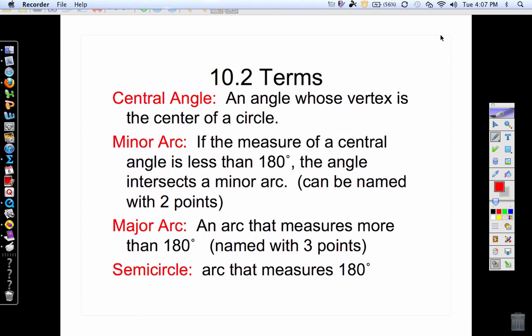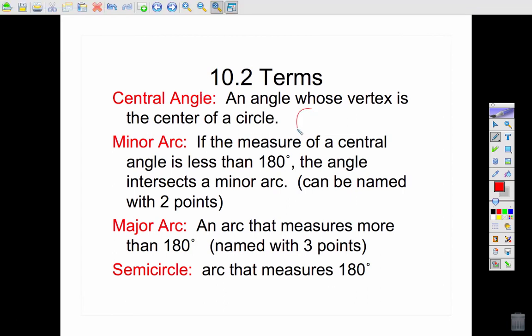First of all, you have these definitions to get down. Central angle is an angle whose vertex is at the center of a circle. If we were just going to draw a quick sketch of that, we have a circle here, and a central angle with the vertex at the center.